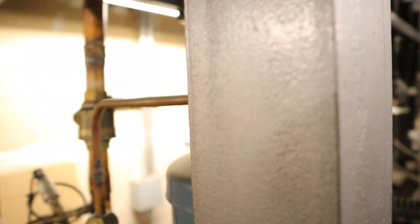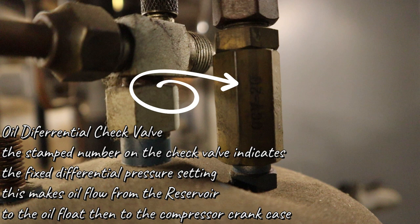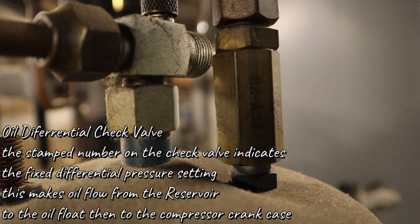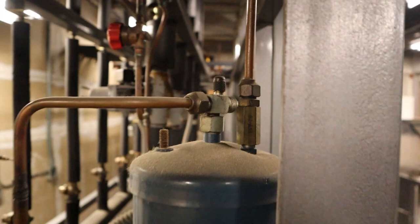So going to check out this check valve right here. The stamp number on the valve is just a differential pressure setting against the suction crankcase of the compressors. So if it's 10, it'll be 10 pounds over the suction of the compressors, or 20, which is most standard, will be 20 pounds over the suction crankcase.